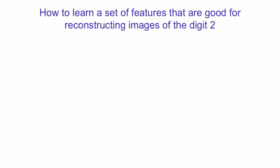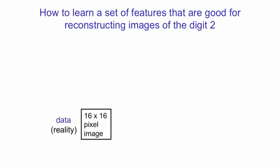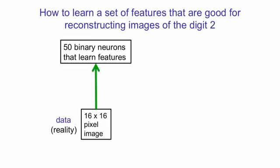I'm now going to show how a relatively simple RBM can learn to build a model of images of digit 2. The images are 16 pixels by 16 pixels and it has 50 binary hidden units that are going to learn to become interesting feature detectors.